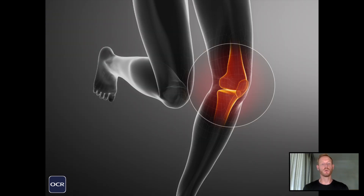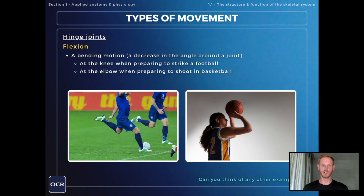Hinge joints are only capable of flexion and extension. Flexion at hinge joints can be defined as a bending motion that results in a decrease in the angle around a joint. Flexion can be seen at the knee when preparing to strike a football, and at the elbow when preparing to shoot in basketball.